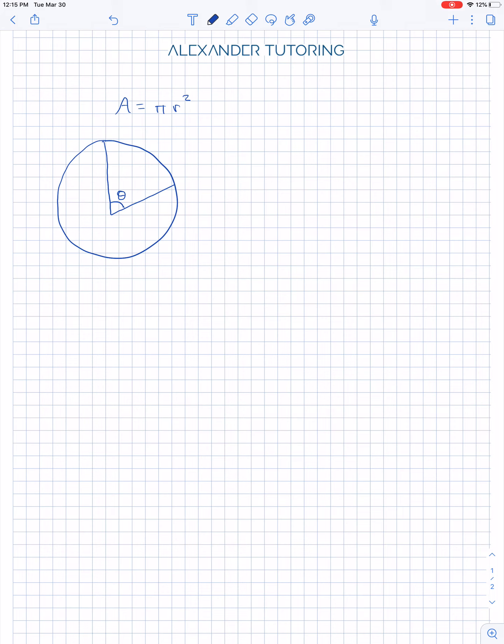Okay, so the formula for a segment is actually really sensical. It's just a proportion, basically. So here's the proportion we're going to set up in terms of the area of a circle and the angle.